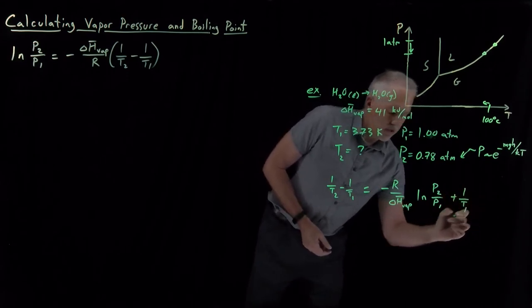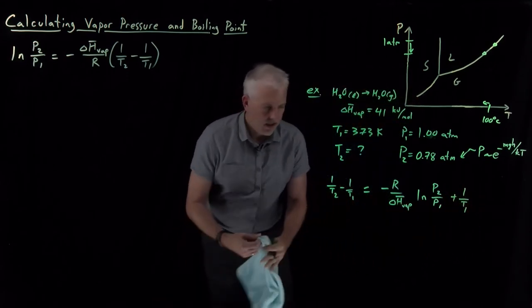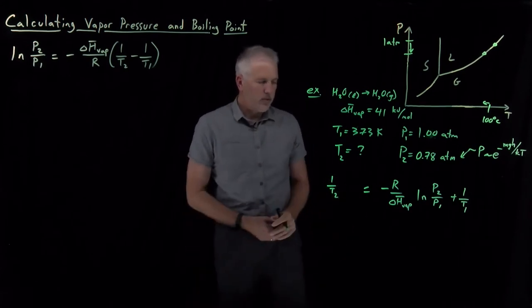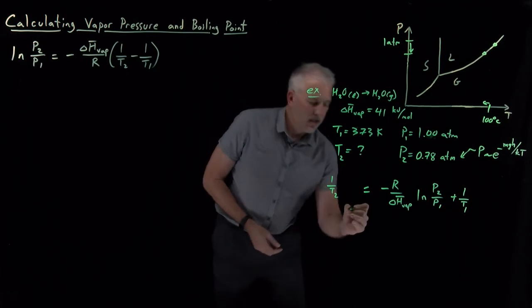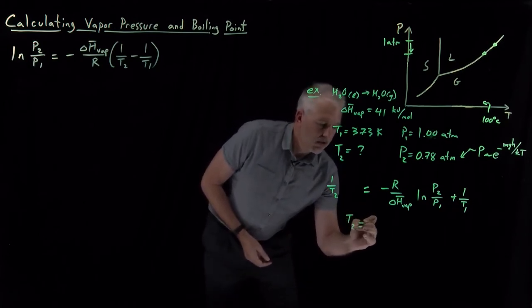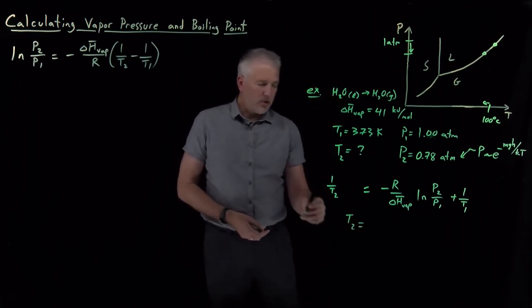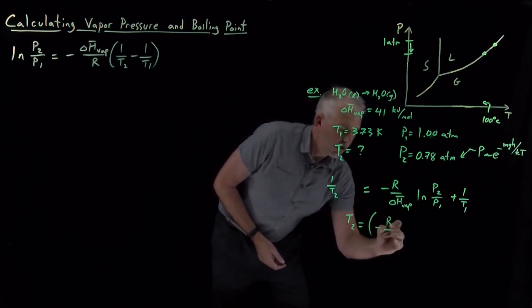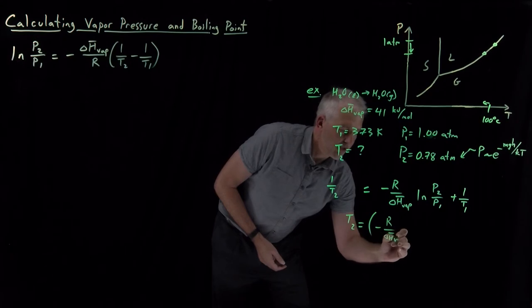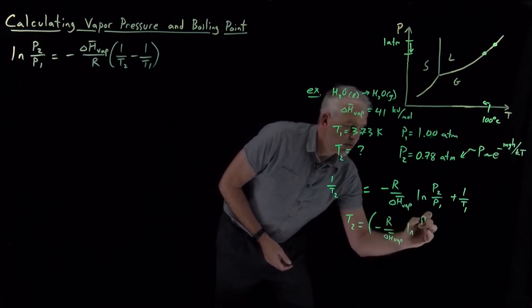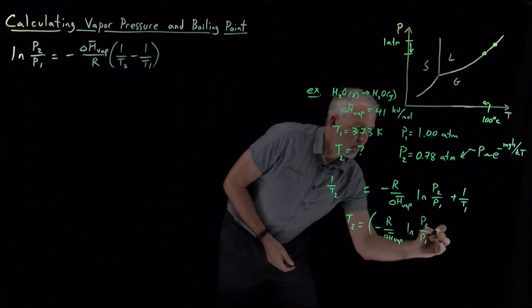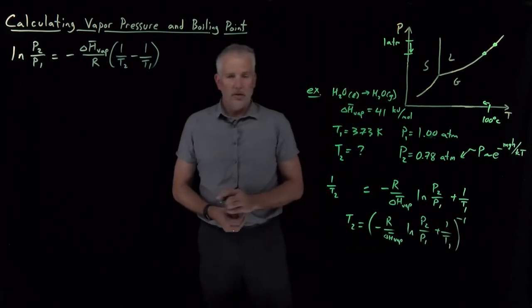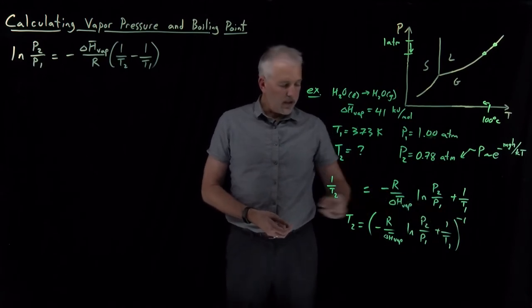I can then add 1 over T1 to both sides. So over here, I'll just write 1 over T1. On this side, I'll just add 1 over T1 and subtract those two. And then the number I'm looking for, T2, is the reciprocal of this. So I have to write the reciprocal of everything on the right side. R over heat of vaporization with a negative sign, log P2 over P1 plus 1 over T1. I'll take the reciprocal, so 1 over that quantity in parentheses.